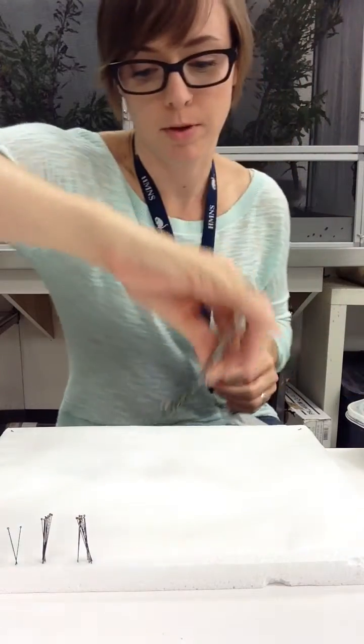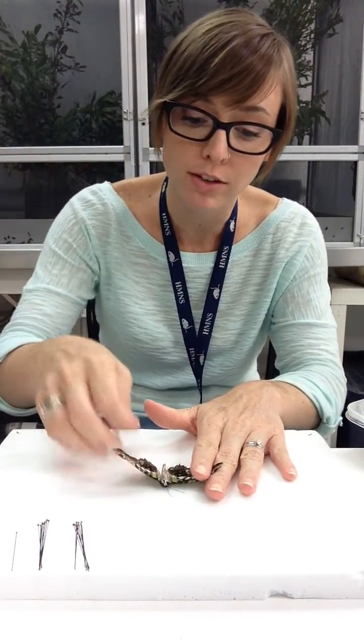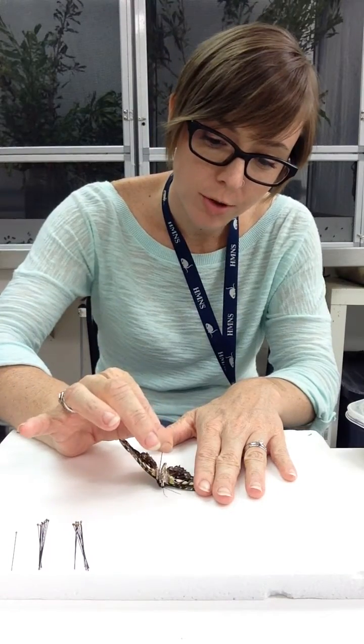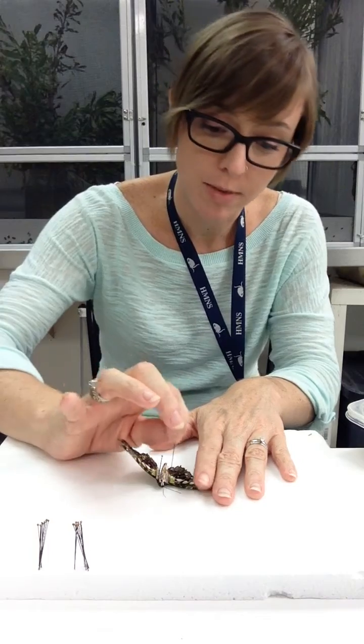I'm going to take my butterfly and place it right in the middle of the styrofoam board. The first thing that I need to do is pin the butterfly down because I'm going to be moving the wings around, but I don't want the butterfly to move. So, I'm going to put one pin on each side of its abdomen, between the butterfly's wing and the butterfly's abdomen, just like that.